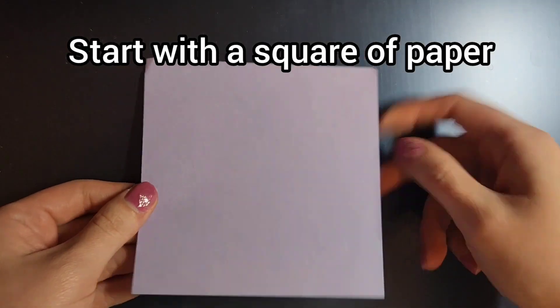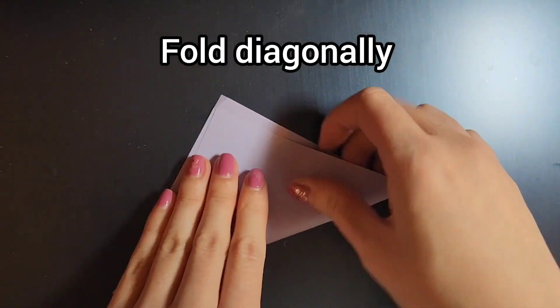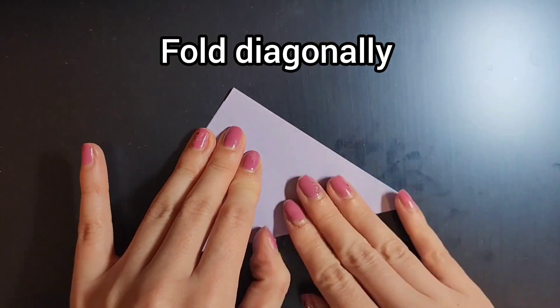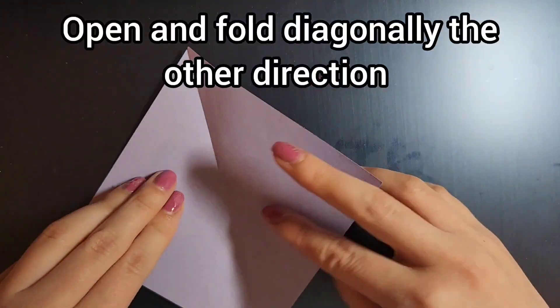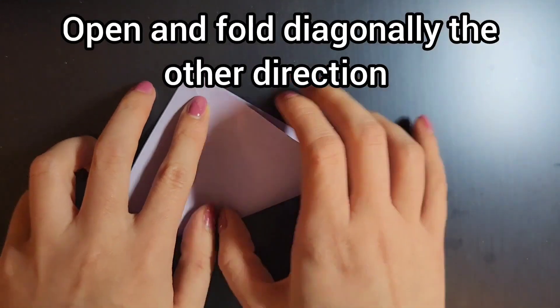Start off with a square of paper. Fold diagonally to form a triangle. Open it up and fold it diagonally in the opposite direction.